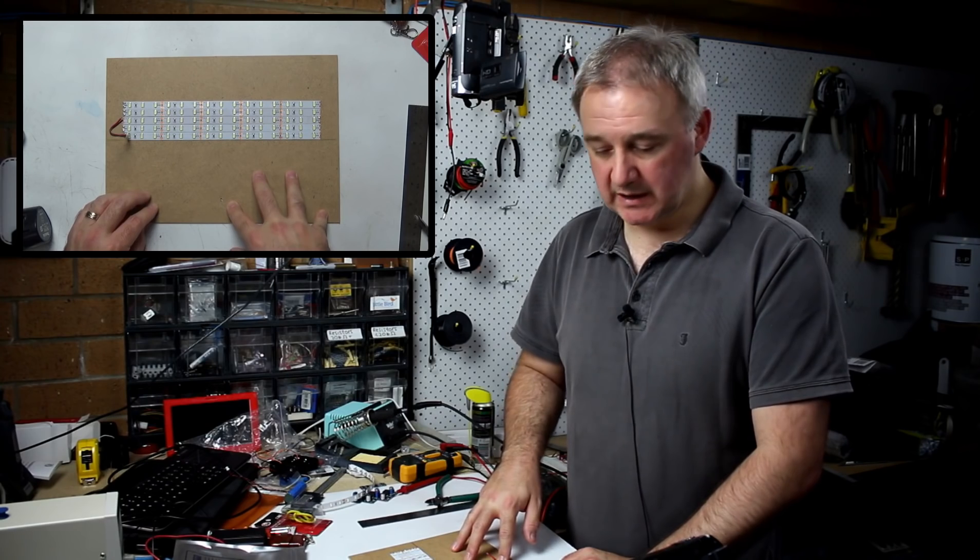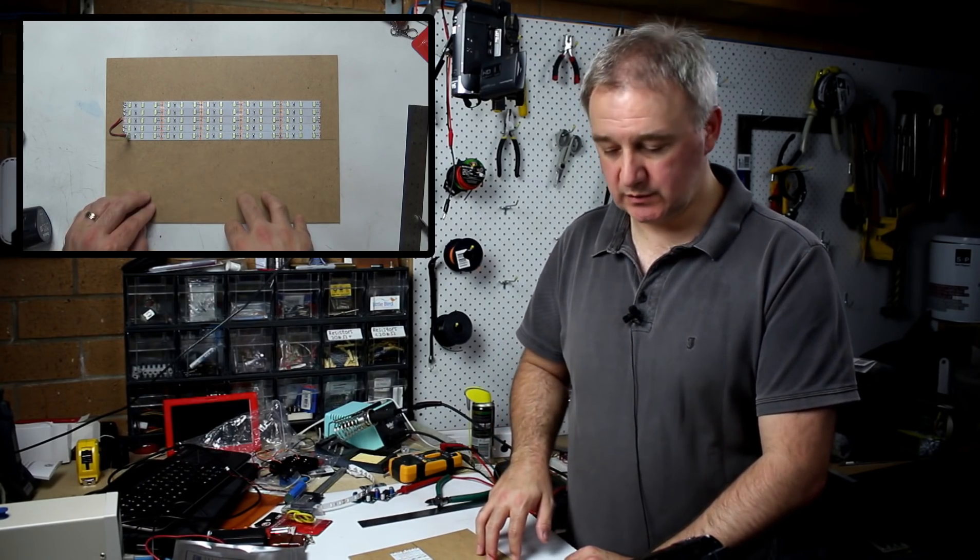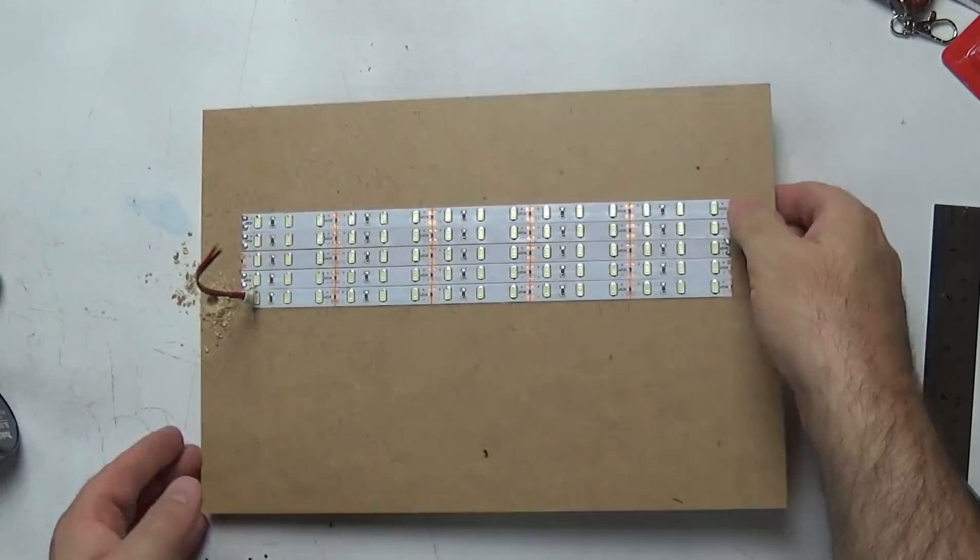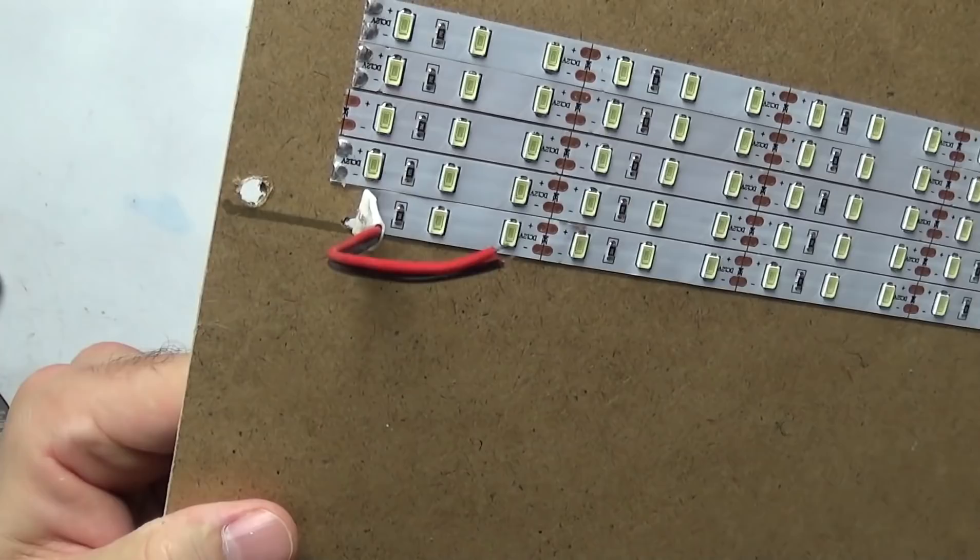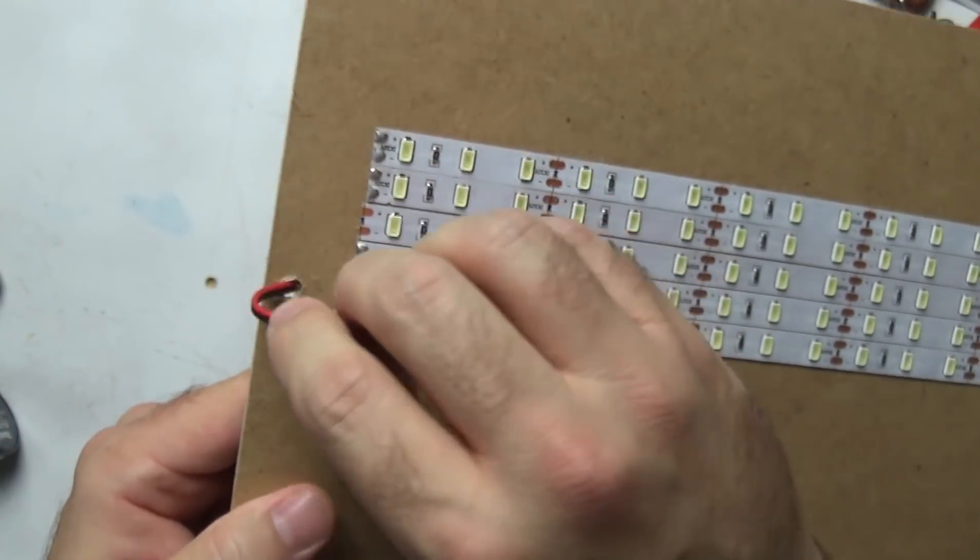Alright, so just before we proceed further, I just need to drill a small hole there in order to be able to poke these wires through, so just do that, probably a five or six mil hole. Okay, so just a nice hole like that in order to be able to poke the wires through and get everything sticking down properly.